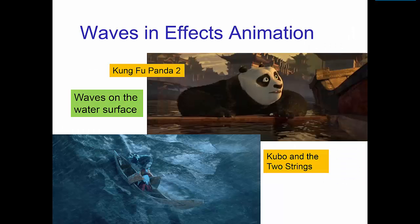In effects animation, the most important types of waves are water waves. Here you see two examples of water waves: small-scale ripples in a scene from Kung Fu Panda 2 and large ocean waves in Kubo and the Two Strings.